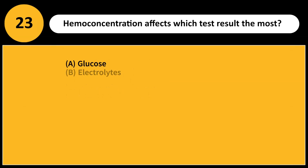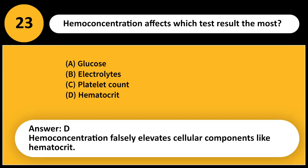Hemoconcentration affects which test result the most? A. Glucose. B. Electrolytes. C. Platelet count. D. Hematocrit. Answer: D. Hemoconcentration falsely elevates cellular components like hematocrit.